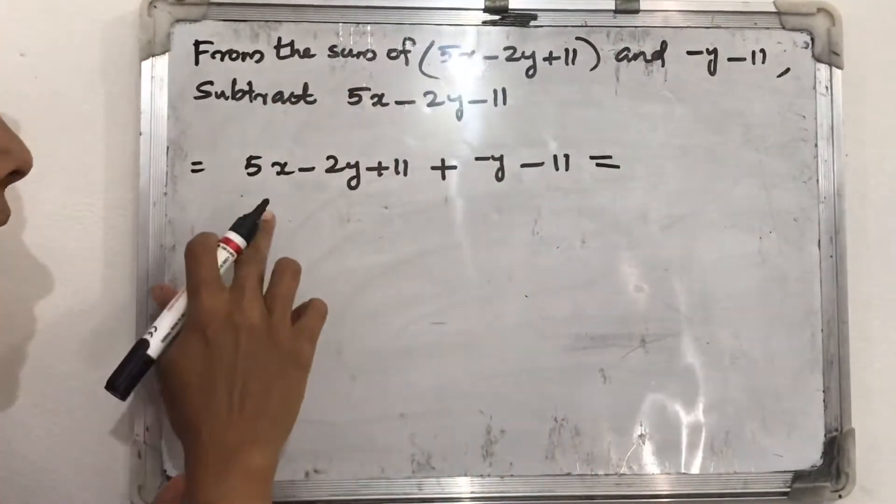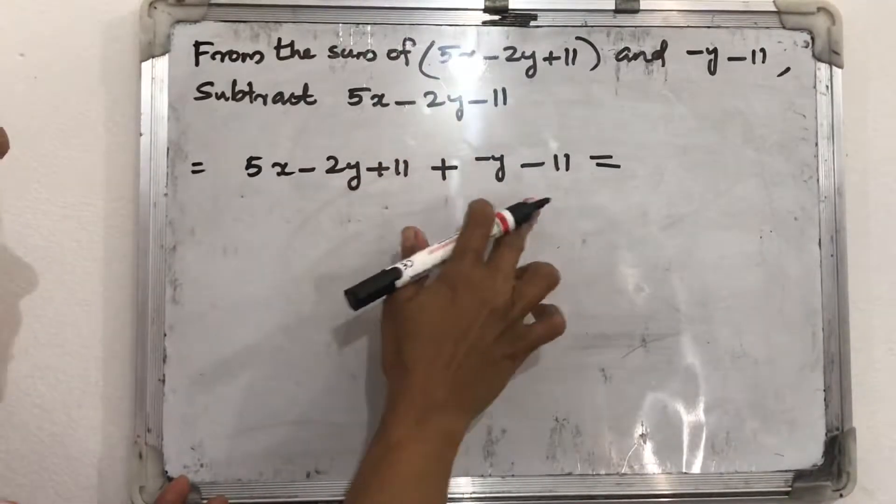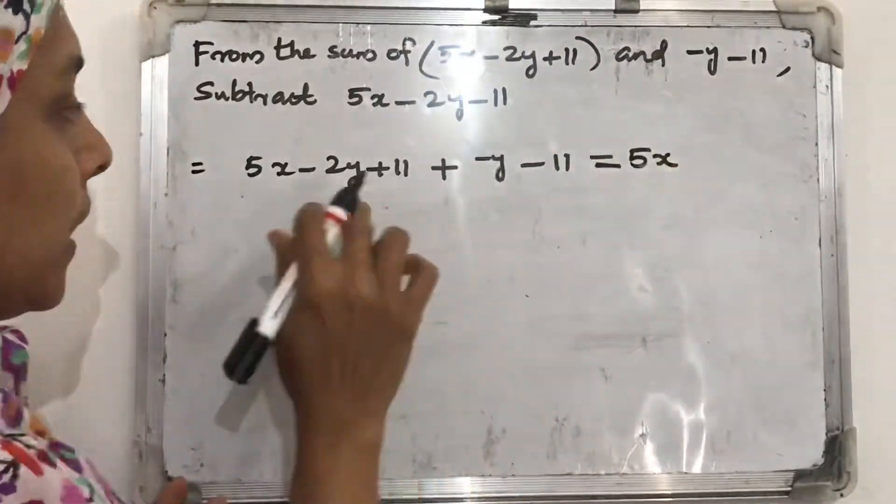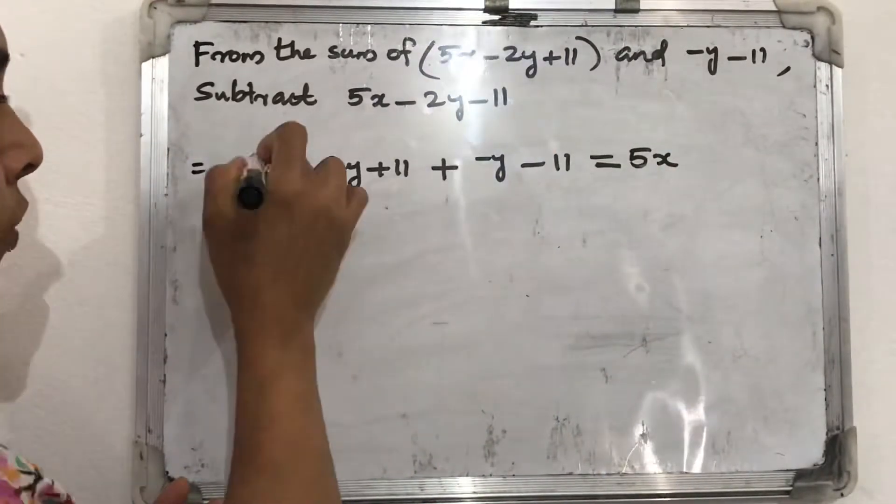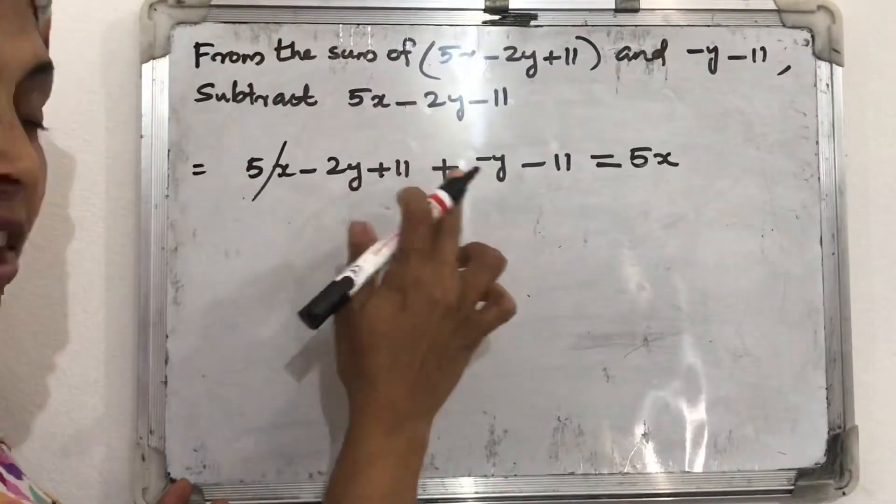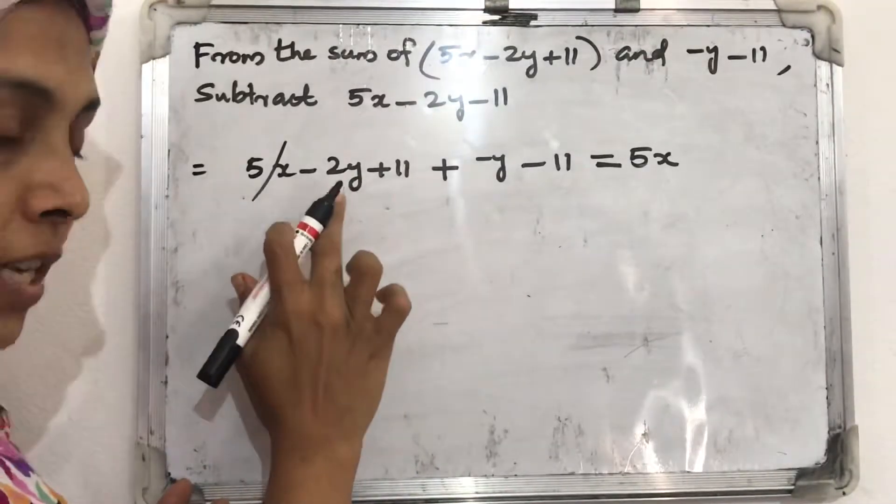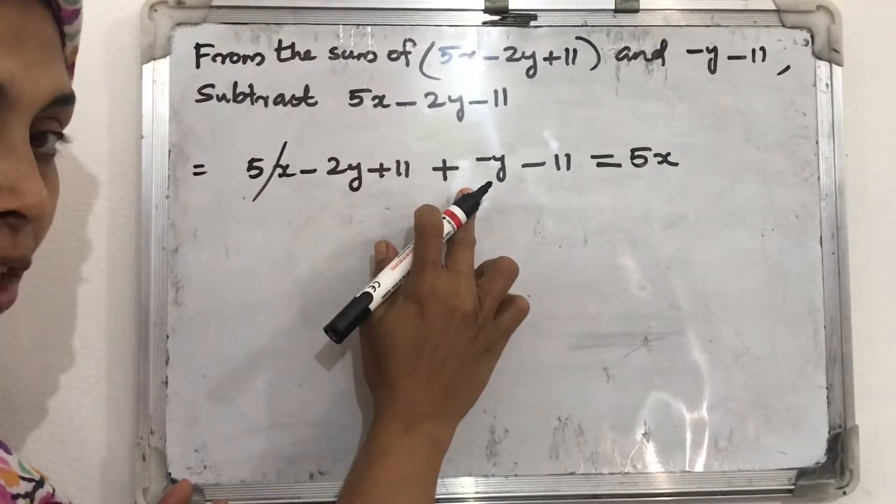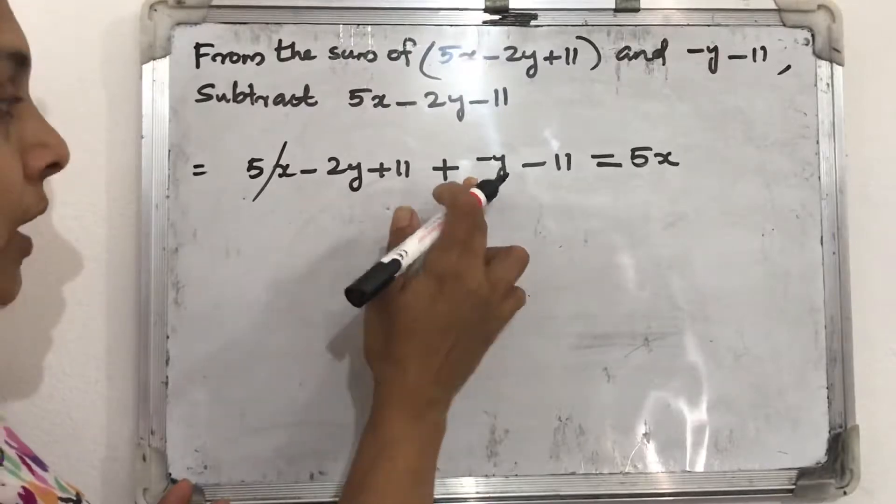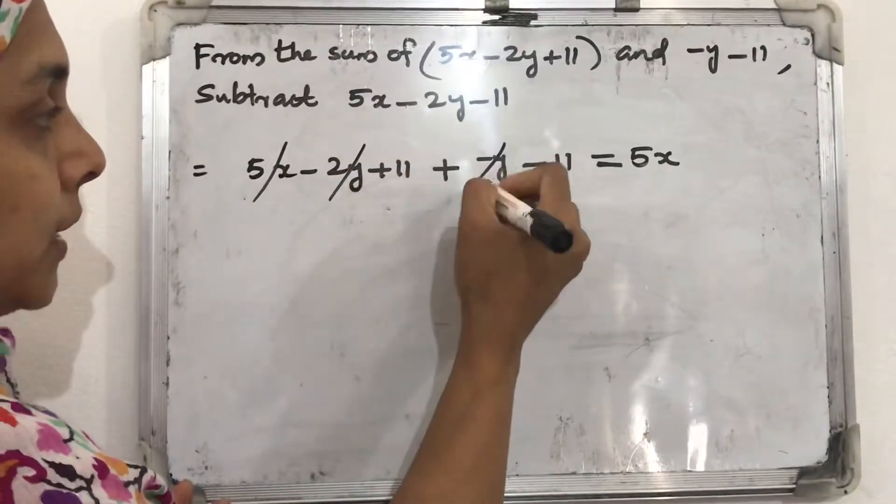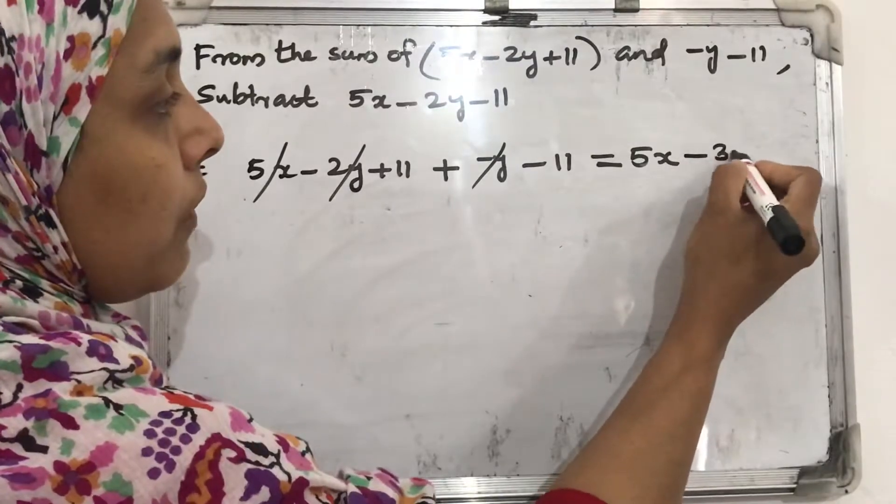So we can write like terms: 5x. Any other term with x here? No. So we can write it as 5x itself. Next, minus 2y. Minus 2y minus y. Minus 2y plus minus y. What is the coefficient? Minus 2. What is the coefficient here? Minus y, coefficient is minus 1. So minus 2 plus minus 1, that is minus 3. So minus 3y.